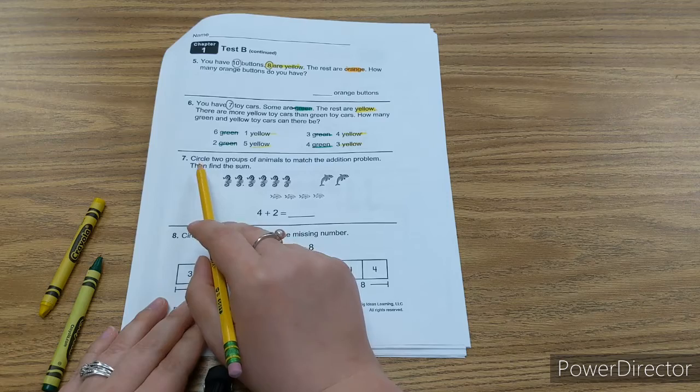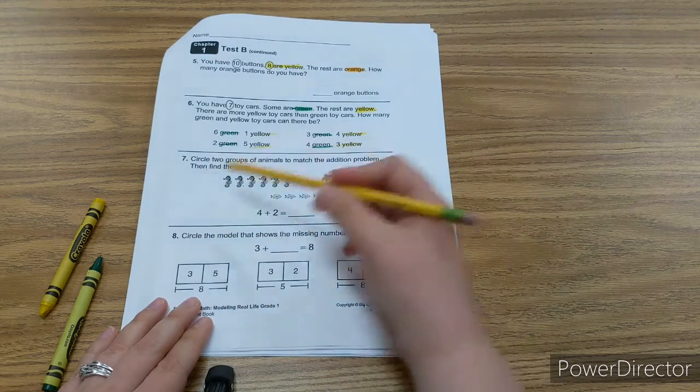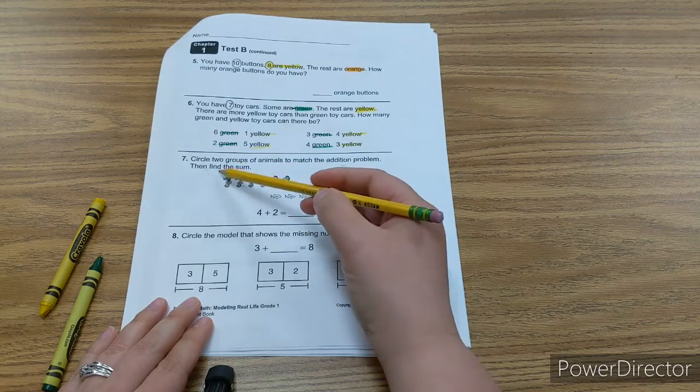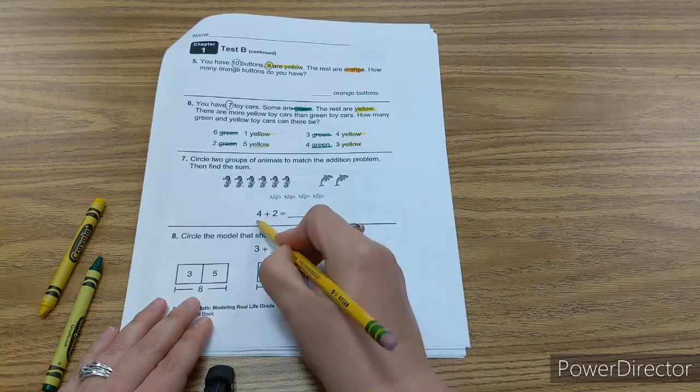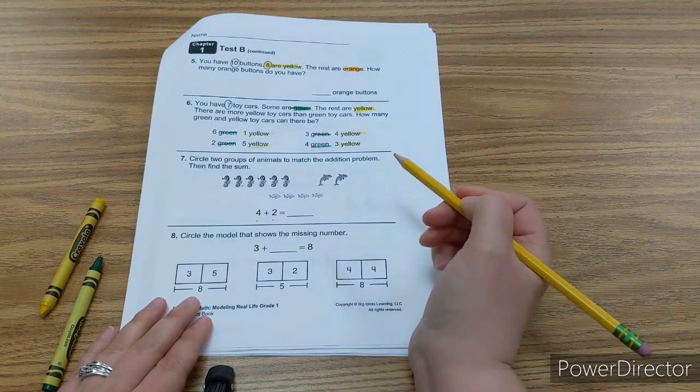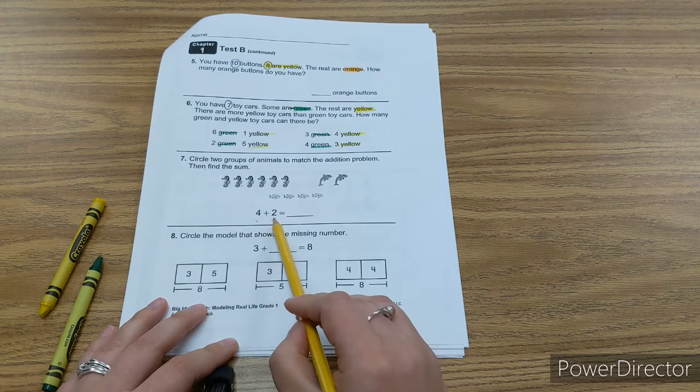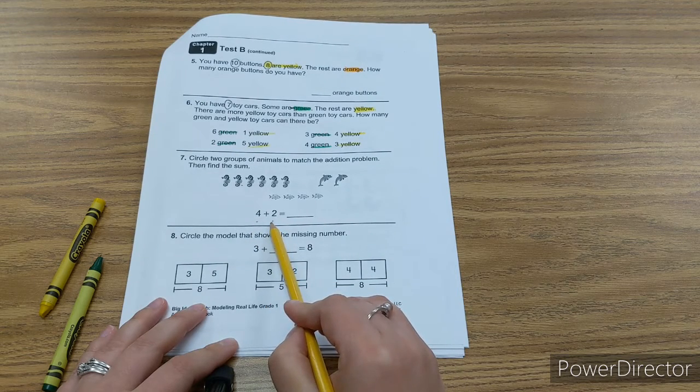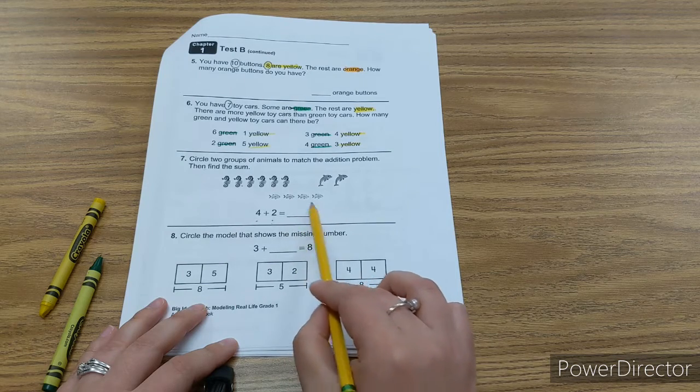Number seven. Circle two groups of animals to match the addition problem, then find the sum. So you want to find where you have four animals and where you have two animals. Cross out the animals that don't work for numbers four and two. You're also going to need to find the sum, the total.